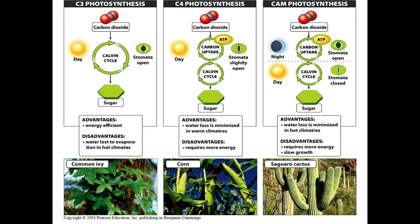Different plants have specialized ways of photosynthesizing depending on their environment. C3 plants are the ones we typically think of — the C stands for the fact that the first carbon (from CO2) is converted into a three-carbon sugar. C3 plants live in cool, moist conditions under normal light and are the most efficient at photosynthesis. C4 plants are more complicated — photosynthesis happens faster because CO2 is delivered more quickly to four-carbon sugars. Corn is an example of a C4 plant.